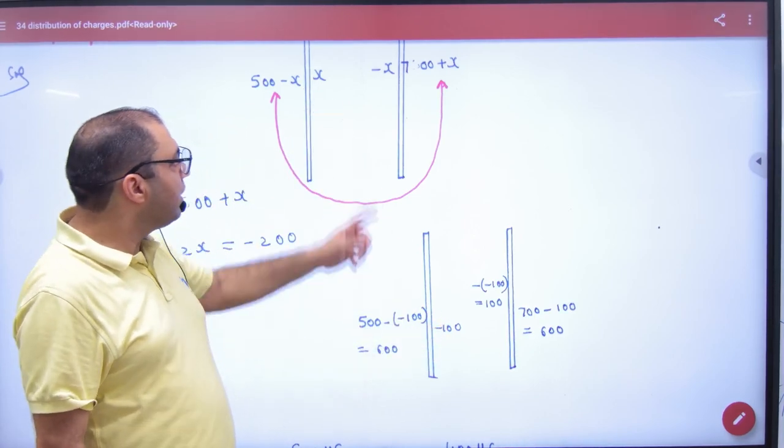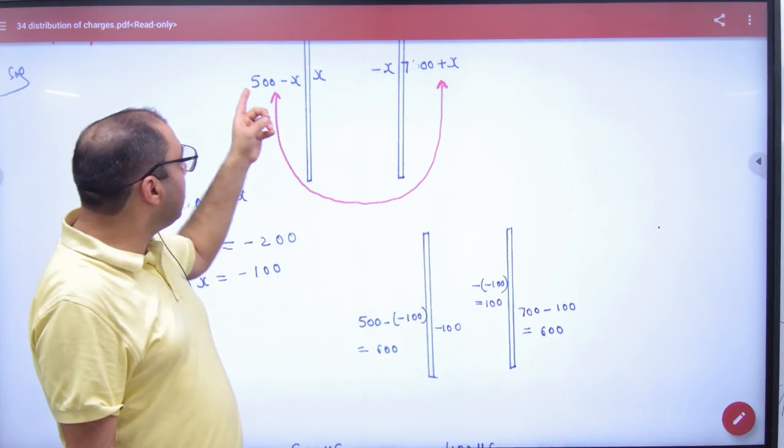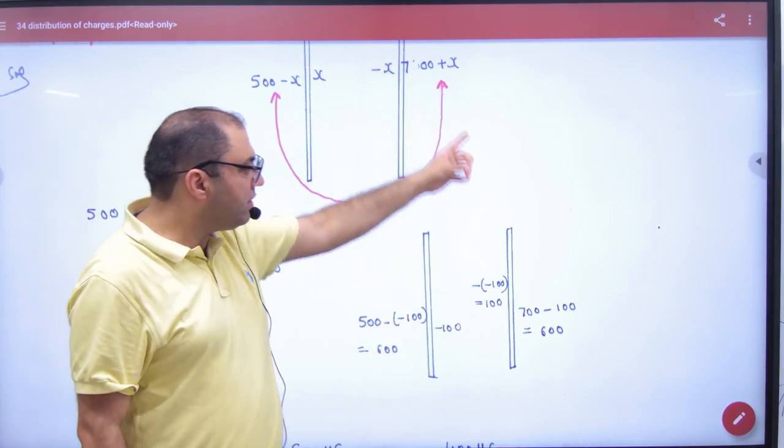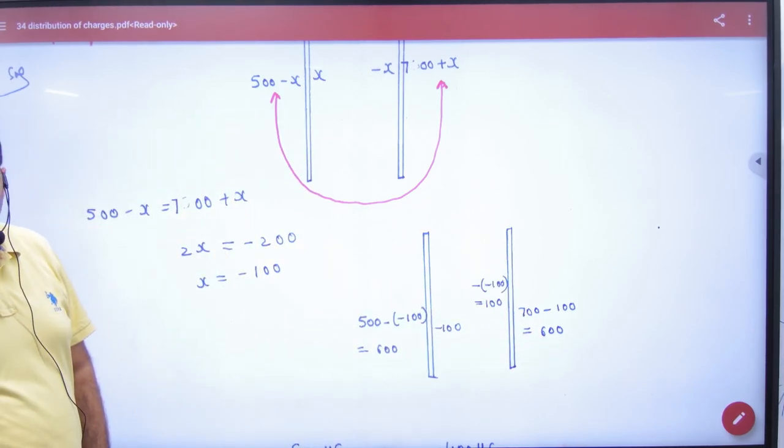On the right hand side, minus 100. On the left hand side, minus 100, minus minus plus. Here 500 minus minus 100. And here 700 minus 100. Charges are done. This is the shortcut.